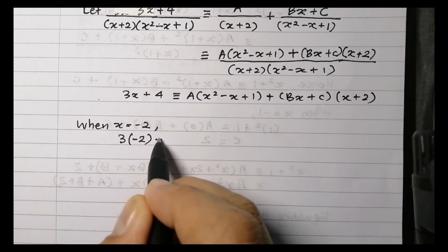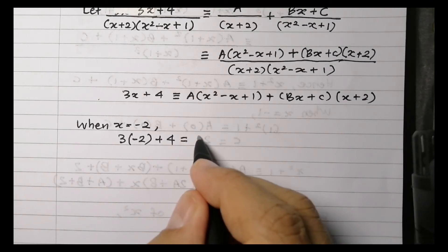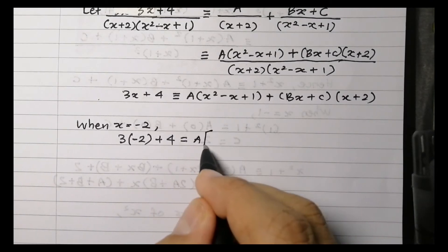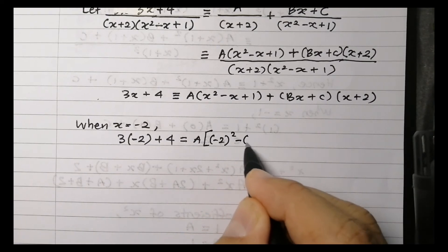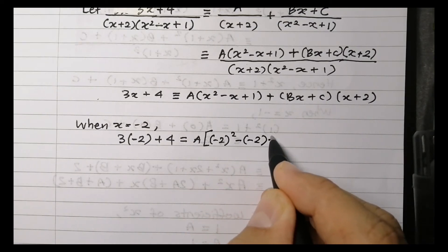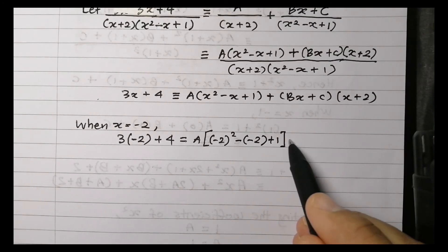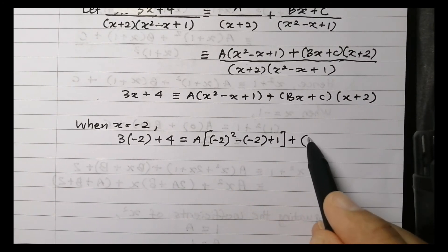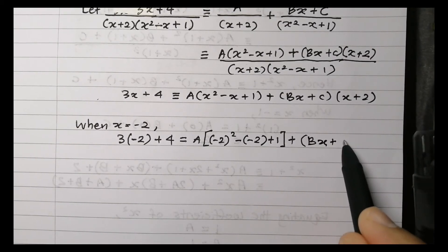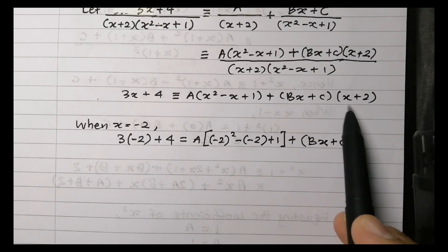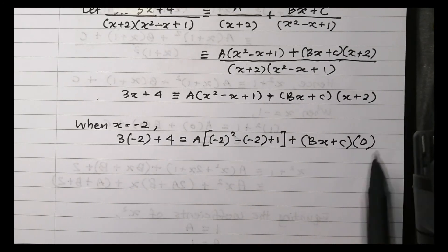3 times negative 2 plus 4 equals A times (negative 2 squared minus negative 2 plus 1). The terms here become 0, because X plus 2, when we substitute X equals negative 2, equals 0.